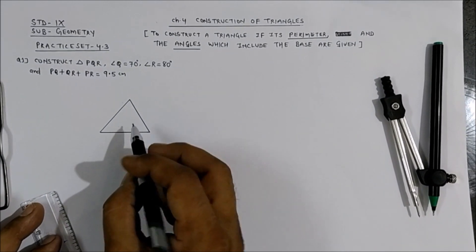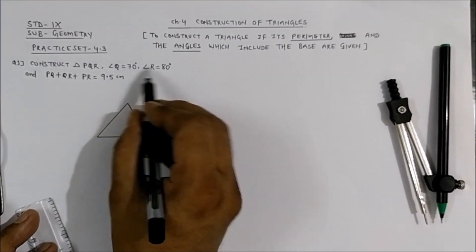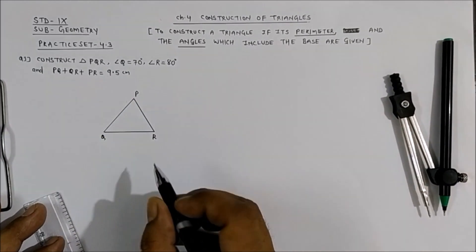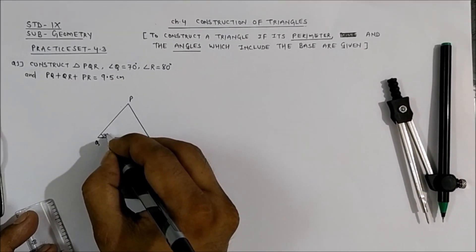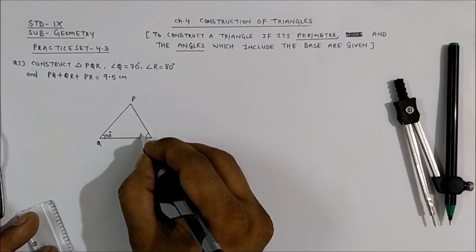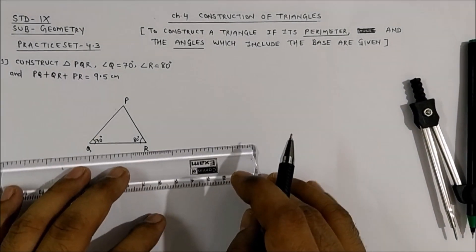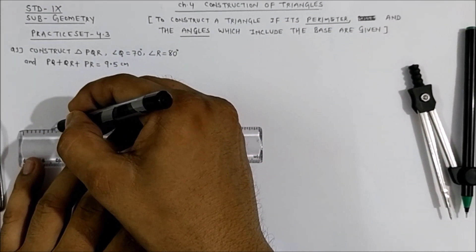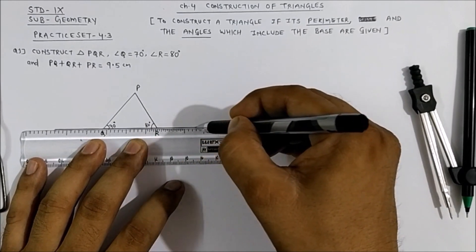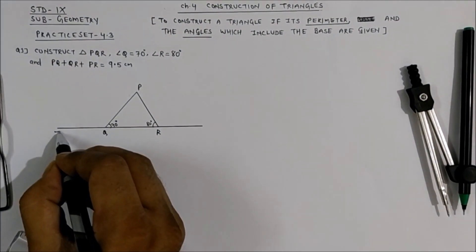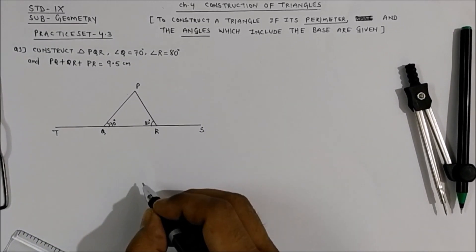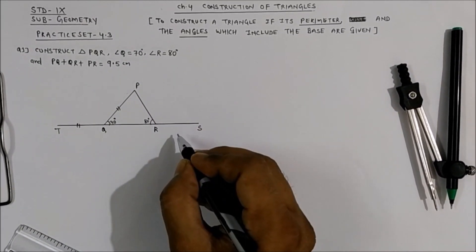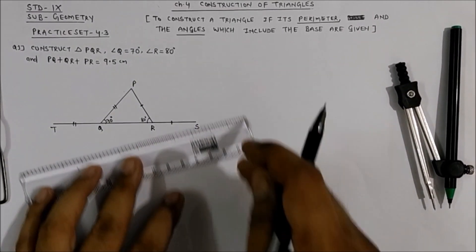First we draw a rough figure. In triangle PQR, angle Q is 70 degrees and angle R is 80 degrees — these two angles are on the base. We extend QR on both sides: on the left we mark point T and on the right we mark point S, such that TQ is congruent to QP and RS is congruent to PR.